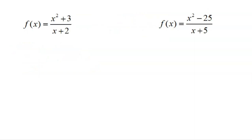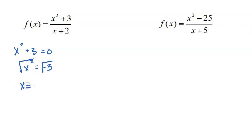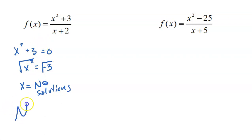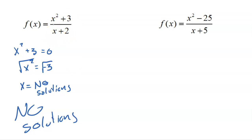Next example: setting X squared plus three equal to zero gives X squared equals negative three. Taking the square root gives an imaginary result — we're not looking at imaginary solutions, only real ones. So there are no numbers that make the numerator zero, meaning there are no solutions and no zeros for this rational function. Negative two makes the denominator zero but isn't a solution anyway, and there's nothing to check for overlap.